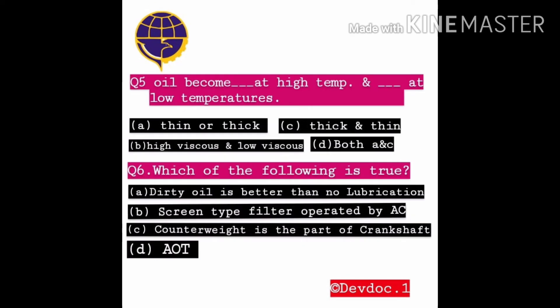Fifth question: Oil becomes dash at high temperature and dash at low temperature. Option A: Thin or thick, B: High viscous and low viscous, C: Thick and thin, D: Both A and C. Sixth question: Which of the following is true? Option A: Dirty oil is better than no lubrication.